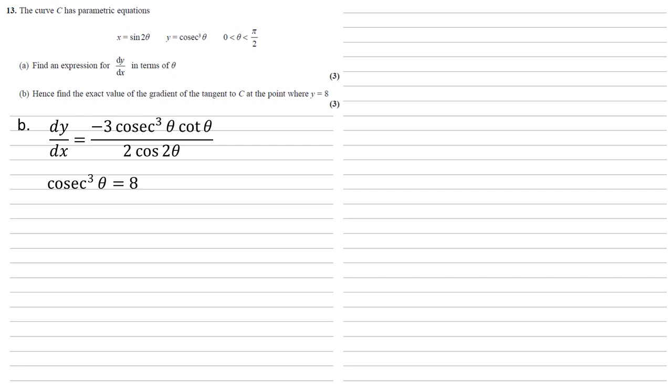Cube rooting both sides gives us that cosec θ equals 2, but cosec is 1 over sine, so this means that sine θ is equal to a half, hence θ must be π over 6. We know it's going to be this value of θ because we're told at the beginning that it must lie between 0 and π over 2.